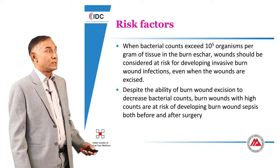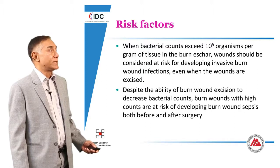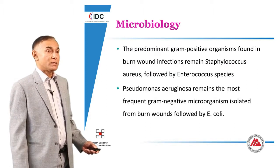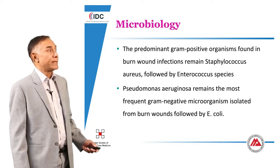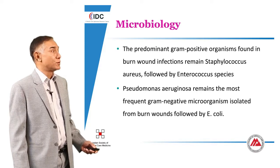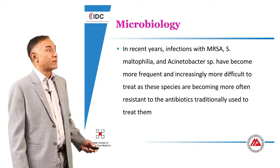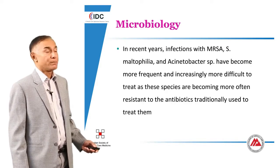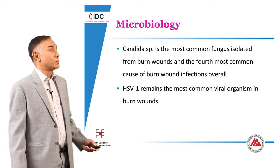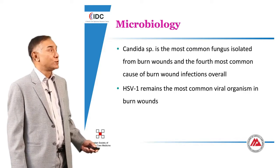Despite the ability of burn wound excision to decrease bacterial counts, sepsis continues to take a significant toll on these patients. What is the microbiology of these infections? Typically early on you see gram-positive organisms, typically Staphylococcus aureus and Enterococcus species. Later on, gram-negatives take over — classically Pseudomonas aeruginosa followed by Enterobacteriaceae. In recent years we have seen increased incidences of MRSA, Stenotrophomonas, and Acinetobacter, directly related to the antibiotic exposure these patients get. Finally, Candida takes over as you use more antibiotics and with more prolonged hospital stay. The important virus in a burn setting is herpes simplex, usually type 1.